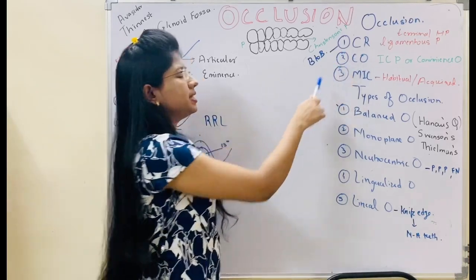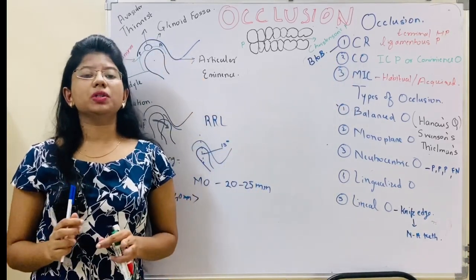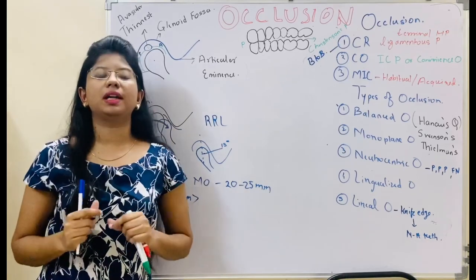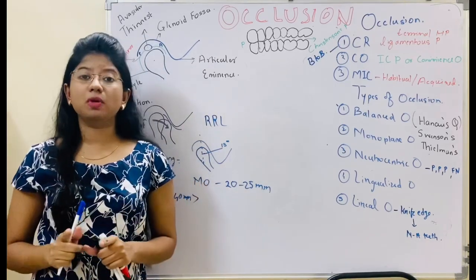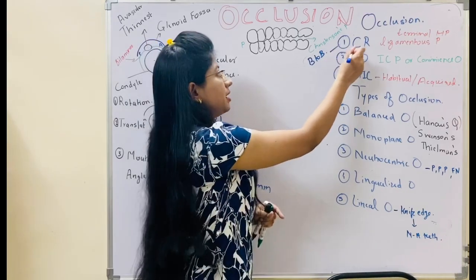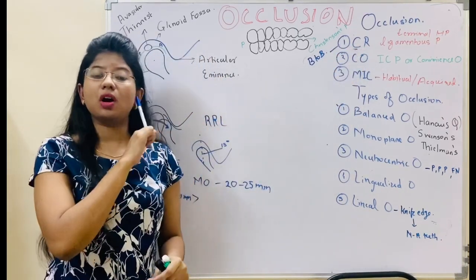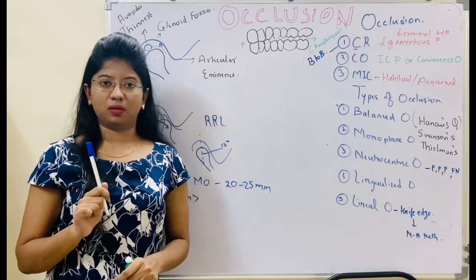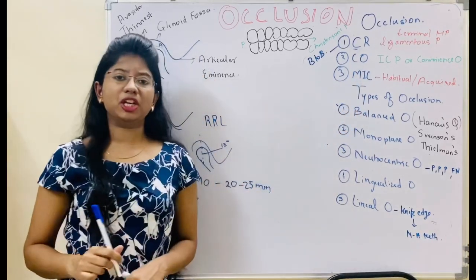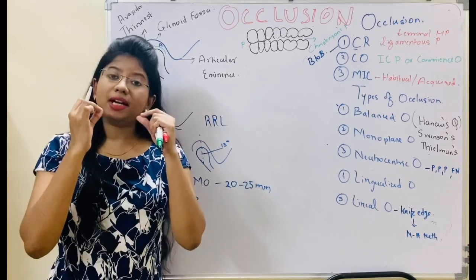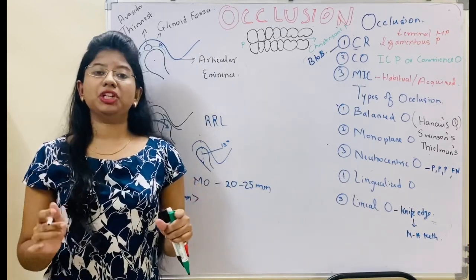Now we will see about centric occlusion. Centric occlusion is the maximum contact of the maxillary and mandibular teeth in centric relation — meaning when the teeth are contacting, the condyle will be in centric relation. And there is maximum intercuspation, which means the contact of the teeth in maximum intercuspation.